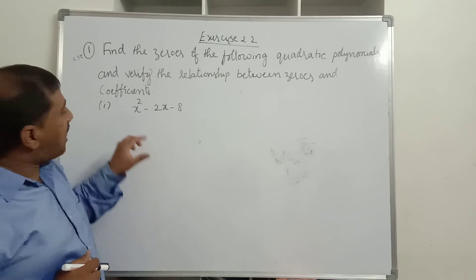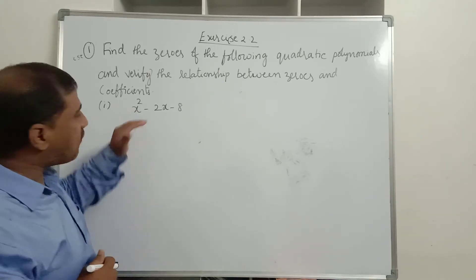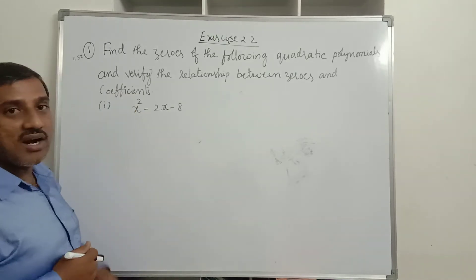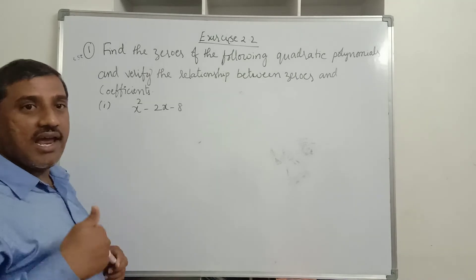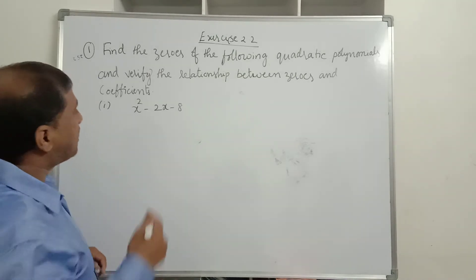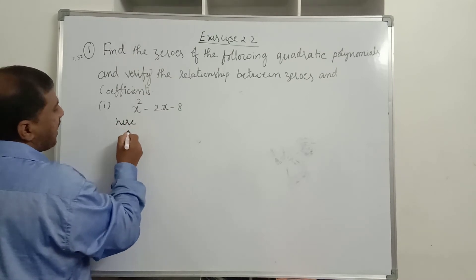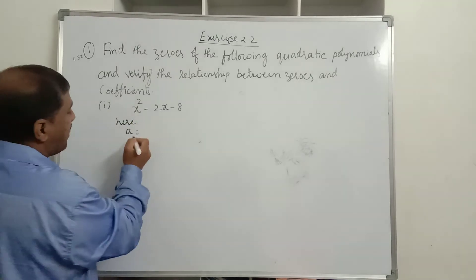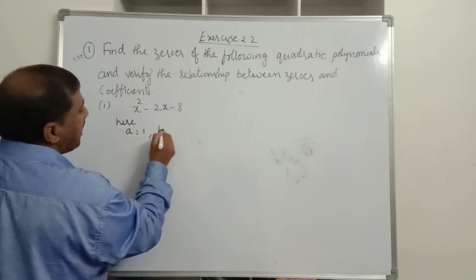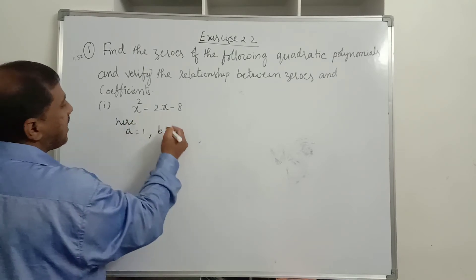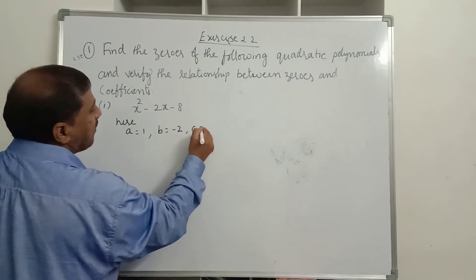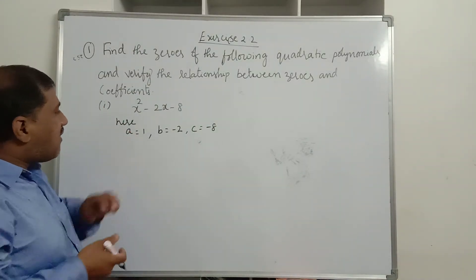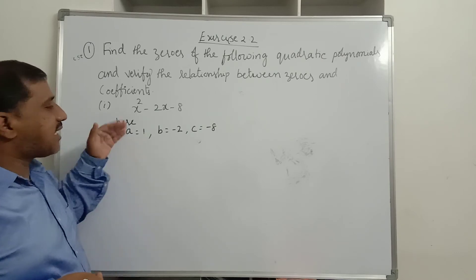Comparing x² − 2x − 8 with the general form ax² + bx + c: A = 1 (coefficient of x², no number means 1), B = −2 (coefficient of x), and C = −8 (constant term). We have identified the coefficients and constants.